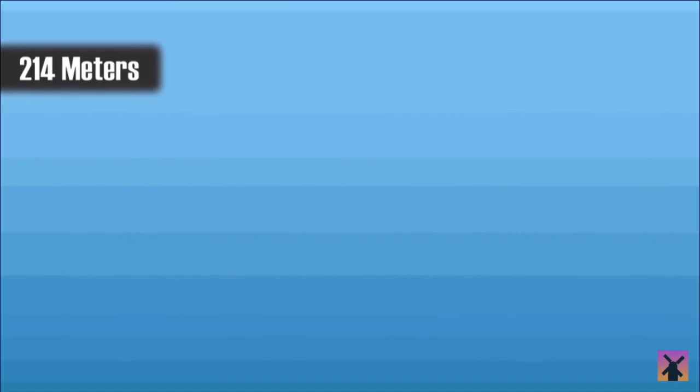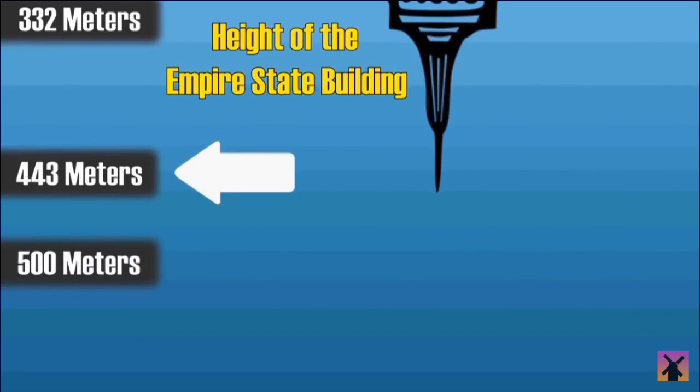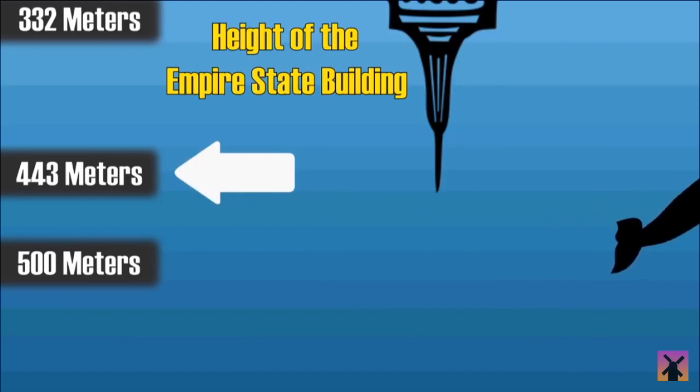But a little further down at 332 meters, we have the scuba diving world record, which was accomplished by another man named Achmed Gaber. If he had swam down another 111 meters, then he would have reached the height of the Empire State Building if it was submerged underwater. And a little further than that, at 500 meters below the surface, we arrive at the maximum dive depth of blue whales, the largest creatures on the planet.